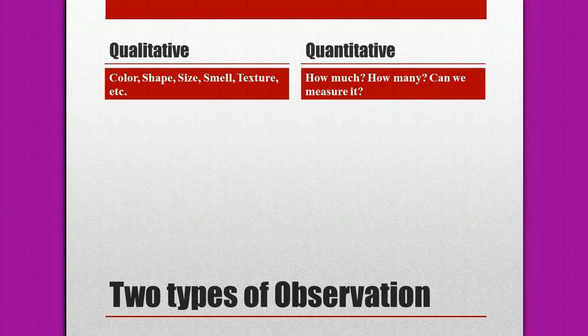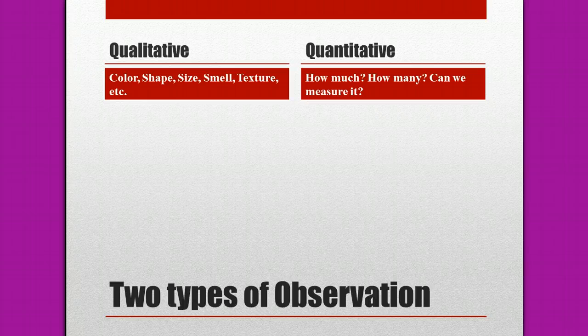We also know that the blackboard is black — we call it a blackboard because it's black. But you can have chalkboards that are green, or whiteboards, so you're describing what you observe about that board when you describe its color. In science, observations are usually followed by attempted explanations, also known as inferences.